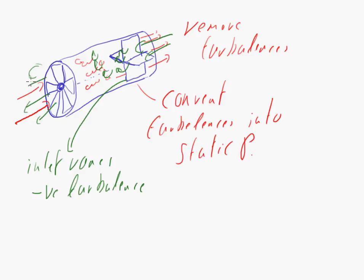In other words, what the inlet vanes do, they overcompensate for what the impeller is going to do later. They induce an extra opposite turbulence, which then the impeller rectifies because it's going the other way.